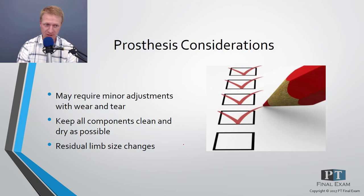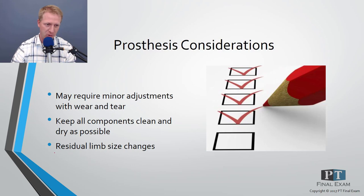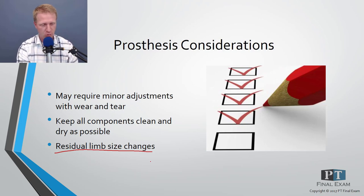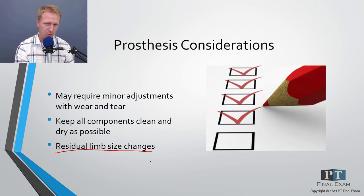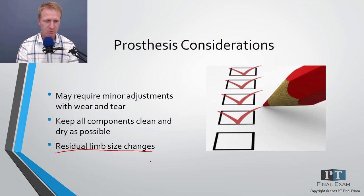When considering prostheses, recognize that minor adjustments will almost always be needed as the device ages — hinges degrade, sockets loosen, screws may need tightening. The residual limb changes size over the first couple of years post-amputation, so the socket may need to be updated. For the NPTE, entry-level awareness of prosthetics is sufficient.